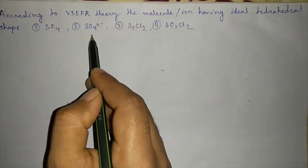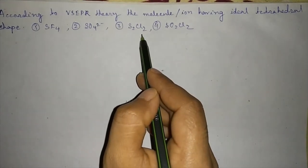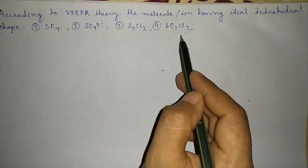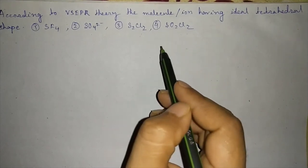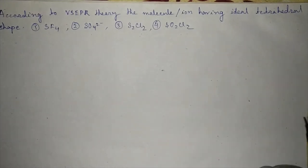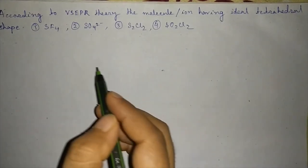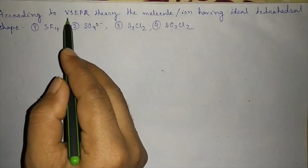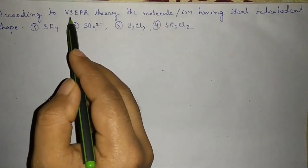SF4, SO4^2-, S2Cl2, or SO2Cl2? This question actually came in UGC CSIR NET. First, we know that VSEPR means valence shell electron pair repulsion.